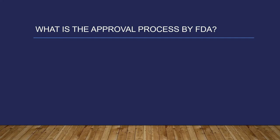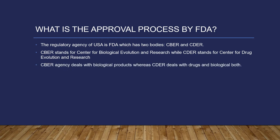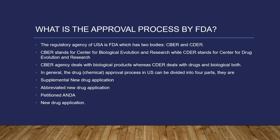What is the approval process by the FDA? The regulatory agency of the USA is the FDA, which has two bodies: one is CBER and the second is CDER. CBER stands for Center for Biologics Evaluation and Research, while CDER stands for Center for Drug Evaluation and Research. CBER deals with biological products, whereas CDER deals with drugs and biologicals both. In general, the drug approval process in the US can be divided into four parts: Supplemental New Drug Application, Abbreviated New Drug Application, medication petition NDA, and New Drug Application.